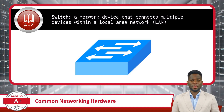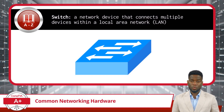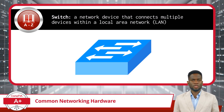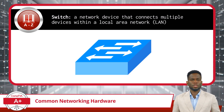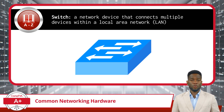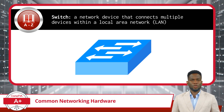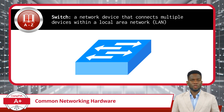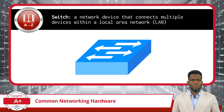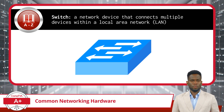At the heart of any modern local area network, you are likely to find a network switch, or maybe multiple switches if the network is large and complex. A switch is a network device that connects multiple devices within a local area network. It acts similarly to a network hub, allowing devices like computers, printers, servers, or other end devices to communicate with each other by forwarding data packets on the same LAN, but with a few improvements.